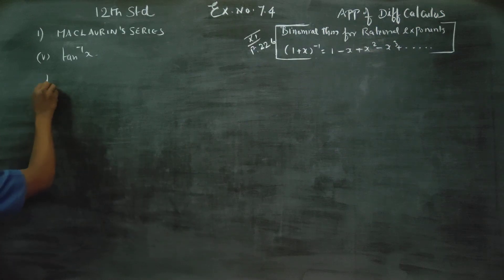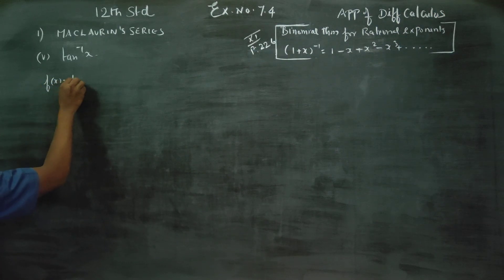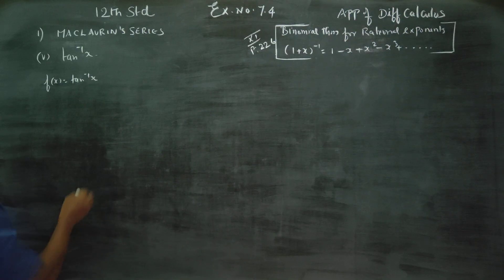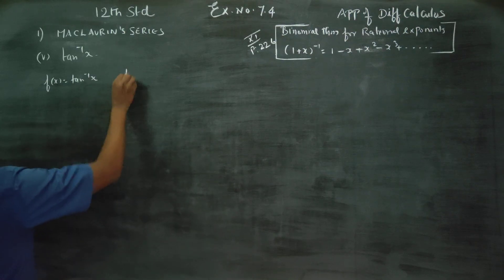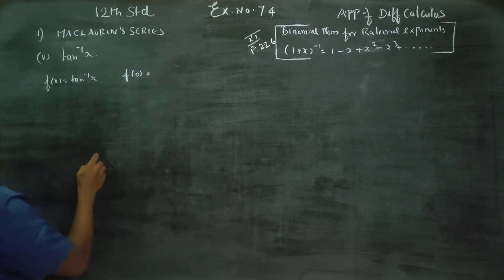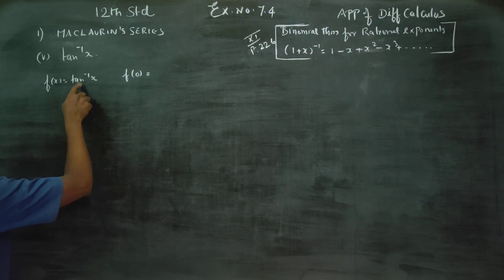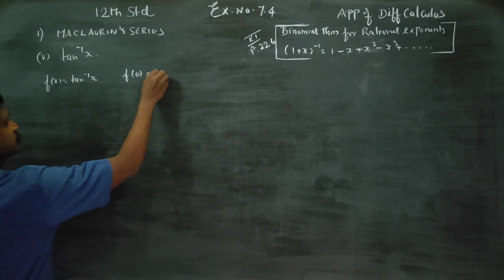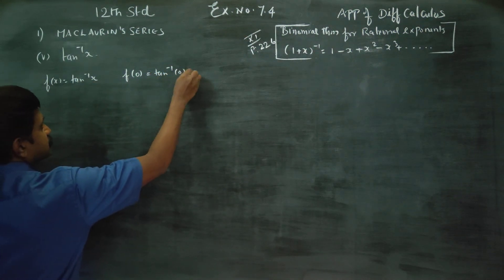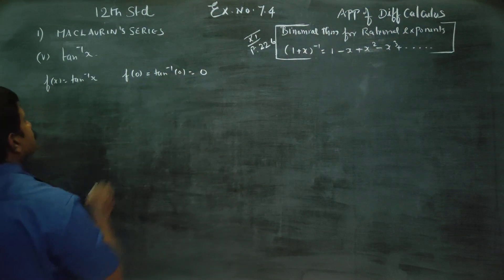First, name this as f of x. So f of x is equal to tan inverse of x. Now find f of 0: f of 0 is tan inverse of 0, and tan inverse of 0 is 0.